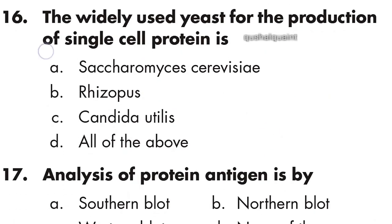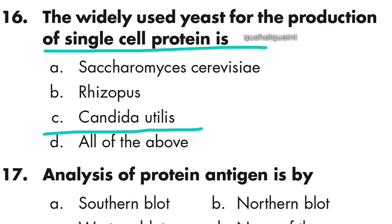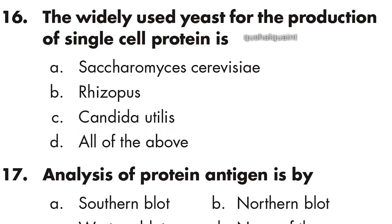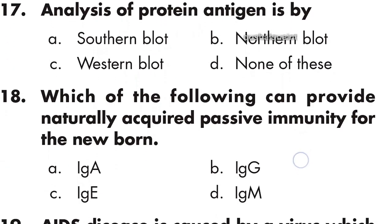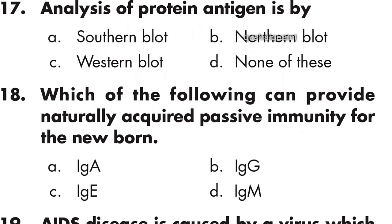Question 16: The widely used yeast for the production of single cell protein is Candida utilis, option C is right. Question 17: Analysis of protein antigen is by Western blot, option C is right.